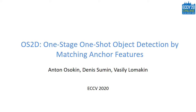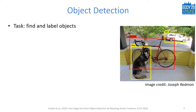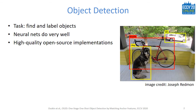This is a joint work with Denis Summin and Vasily Vamakin. In object detection, the goal is to localize and classify objects in images. Localization means drawing tight bounding boxes around objects of interest. As of today, object detection is mostly tackled by neural networks, which have achieved tremendous success, and the community has created high-quality open source implementations that simplify bringing object detection to applications.